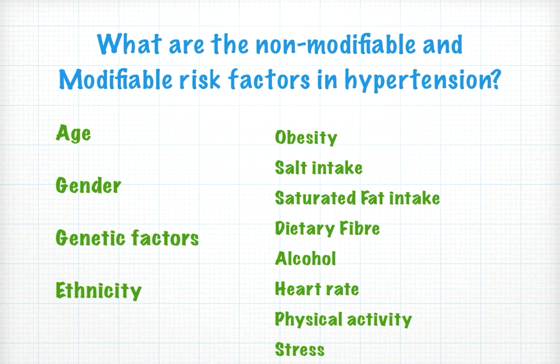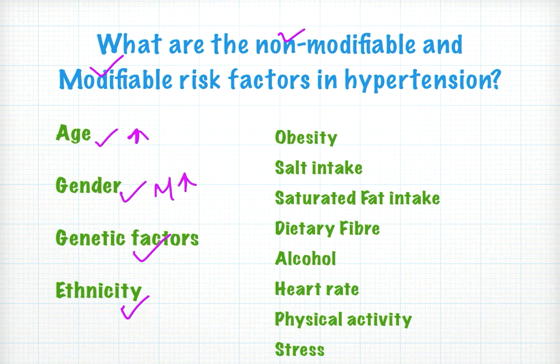The next question is: what are the non-modifiable and modifiable risk factors in hypertension? Non-modifiable risk factors include age, gender, genetic factors, and ethnicity. Increasing age increases blood pressure. Males have higher blood pressure, with the exception that post-menopausal women also have high blood pressure. A family history of hypertension impacts blood pressure, and certain ethnicities are more prone to high blood pressure.